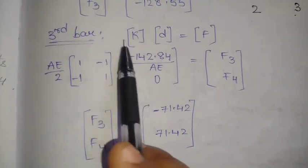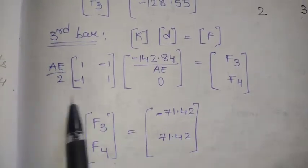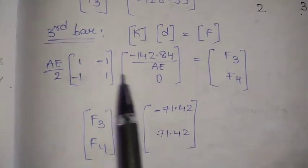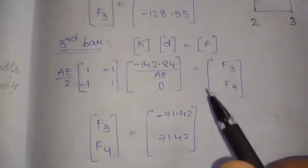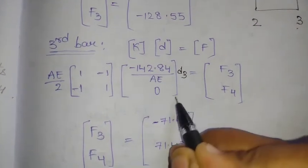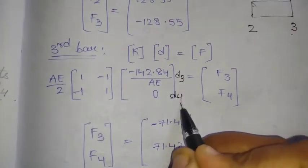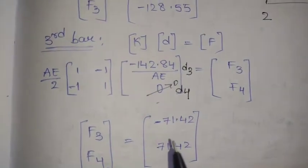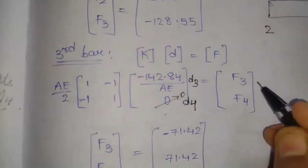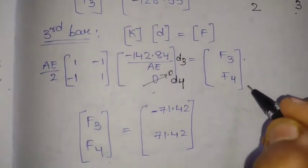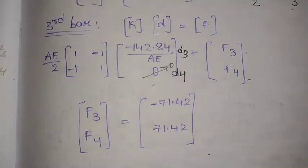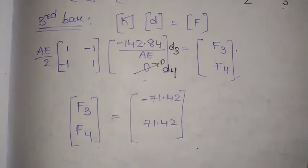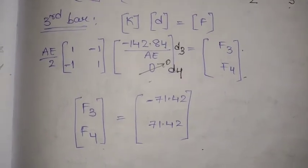For the third bar, we use its stiffness matrix K and the displacement vector [D3, D4], where D4 = 0 due to the fixed condition. Solving KD = F gives us the nodal forces F3 and F4 for the third bar. This completes the solution for all three elements.